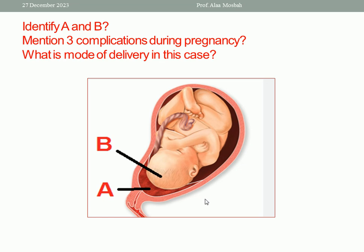Mention three complications during the pregnancy. Antepartum hemorrhage, which is painless, causeless, and recurrent, and can be severe or moderate bleeding. Prematurity — need to do delivery early because of severity of bleeding. Intrauterine fetal death can happen. Also, of course, postpartum hemorrhage.